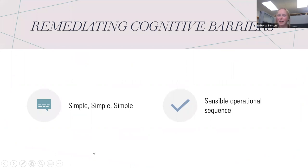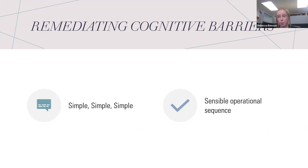Cognitive barriers can affect individuals with disabilities but also the general public. Research suggests: keep it simple and keep the sequence. Think of a microwave — some are very simple with only numbers, a start button, and maybe a few pictures for pizza or popcorn. That makes sense to most people: type in how long, push start. But when a microwave also functions as an oven with dials, temperature controls, and multiple settings, it's not as usable to the general public.